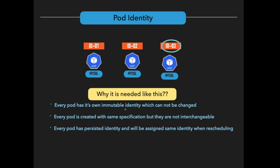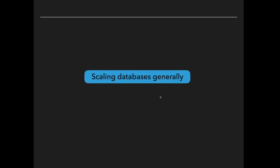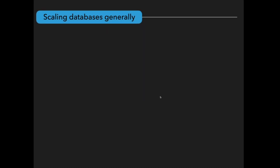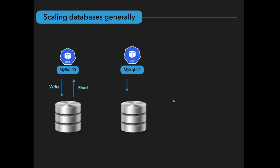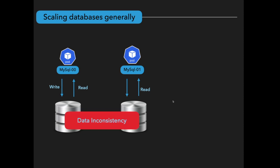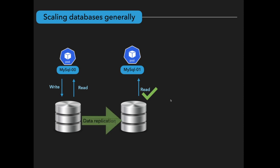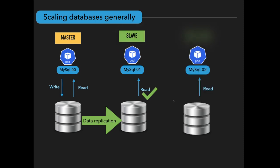Why do we need this kind of technique? Why can't we have interchangeable pods like in a deployment component? Here is how database scaling generally works: if we have one MySQL pod that handles both writing and reading data, we cannot add another MySQL pod that acts in the same way. If we allow multiple MySQL instances to read and write the same data, we will end up with data inconsistency. Instead, only one MySQL pod has permission to write and read data, while multiple MySQL pods are allowed to read the same data. The pod with write capability is called the master, and the rest are called slaves.